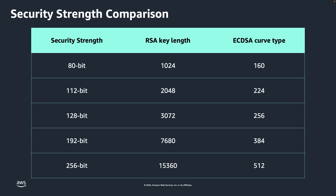ECDSA provides higher security strength for lower computational cost. ECDSA P256, for example, provides 128-bit security strength and is equivalent to an RSA 3072 key. Meanwhile, ECDSA P384 provides 192-bit security strength equivalent to the key associated with an RSA 7680 certificate. In other words, an ECDSA P384 key would require 2 to the 192nd power tries to exhaust the key space. Take a look at this table for an in-depth comparison of the different security strengths for RSA key lengths and ECDSA curve types.